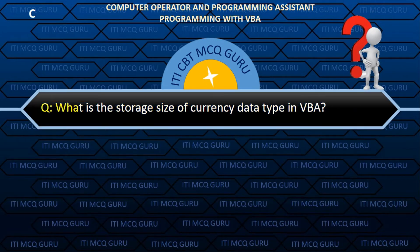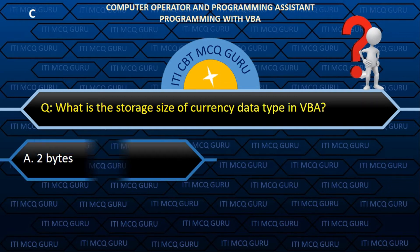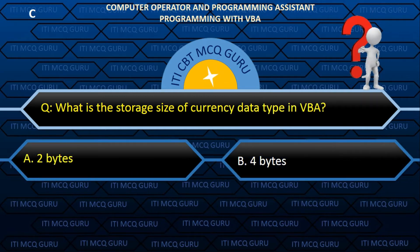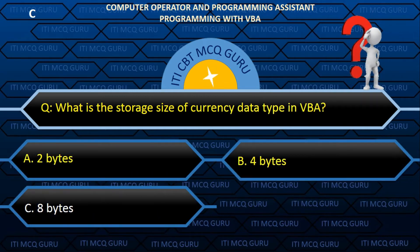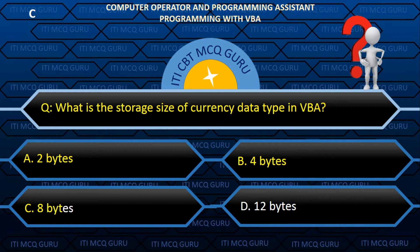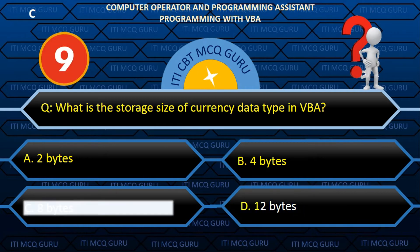What is the storage size of the currency data type in VBA? Answer: 8 bytes.